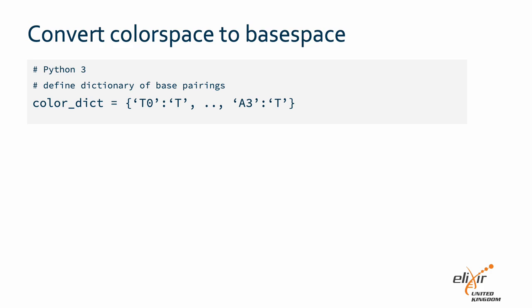An issue with using outdated data like color space is that many of the analysis tools are no longer maintained. If you can accept the risk of sequencing errors causing systemic changes, you can easily convert color space FASTQ files into base space.